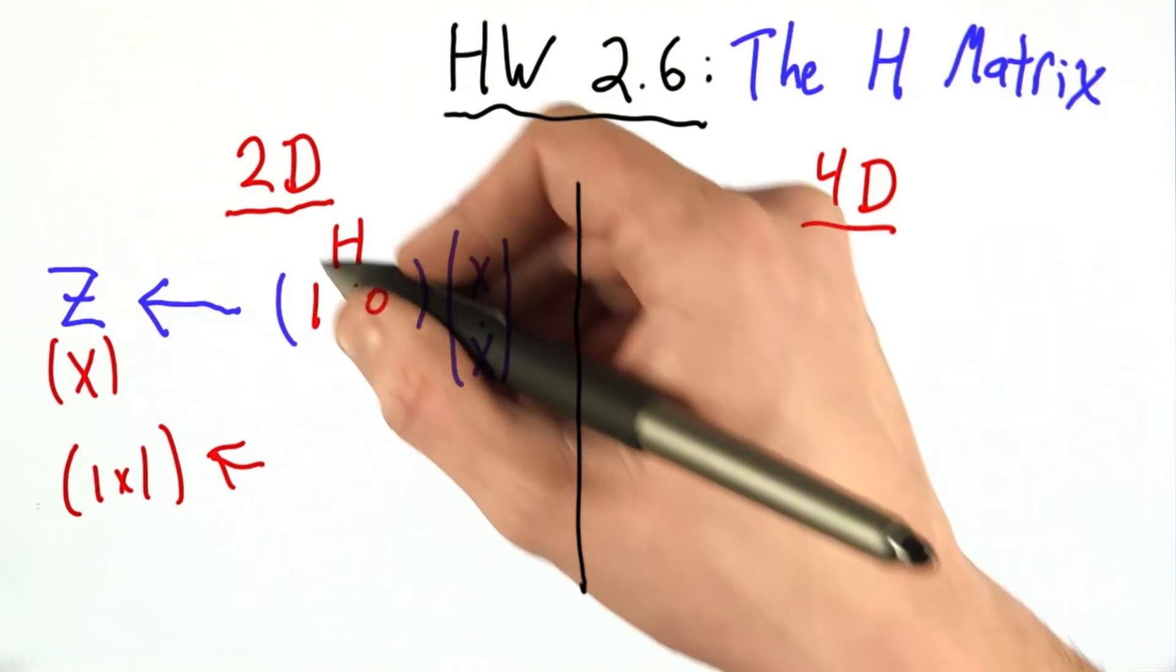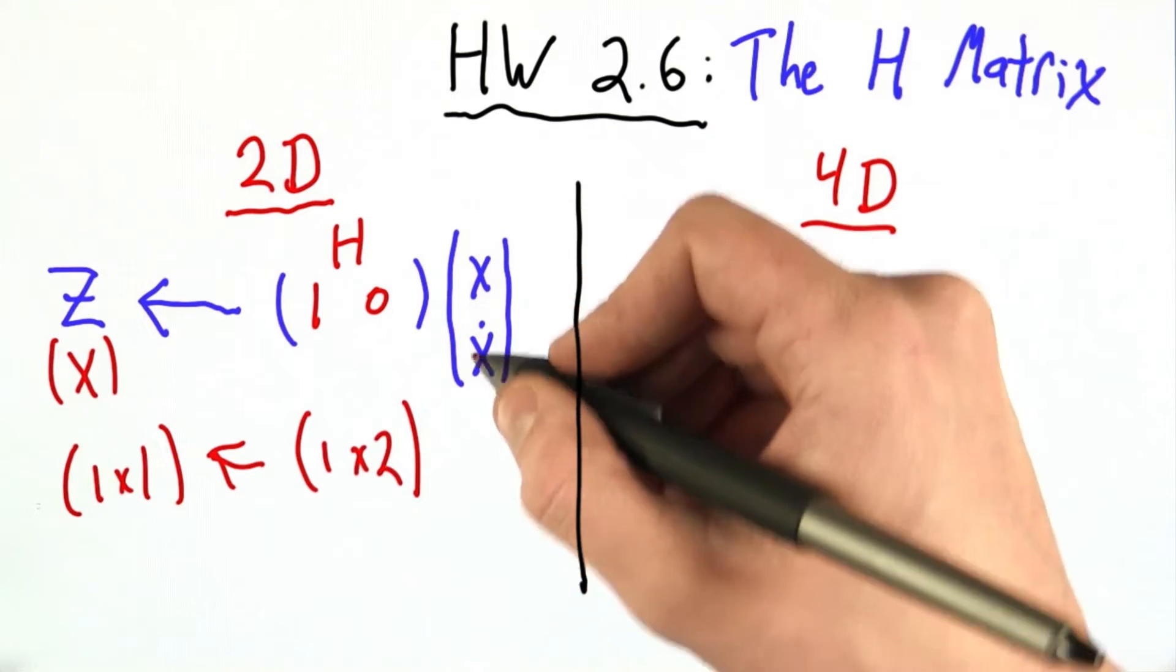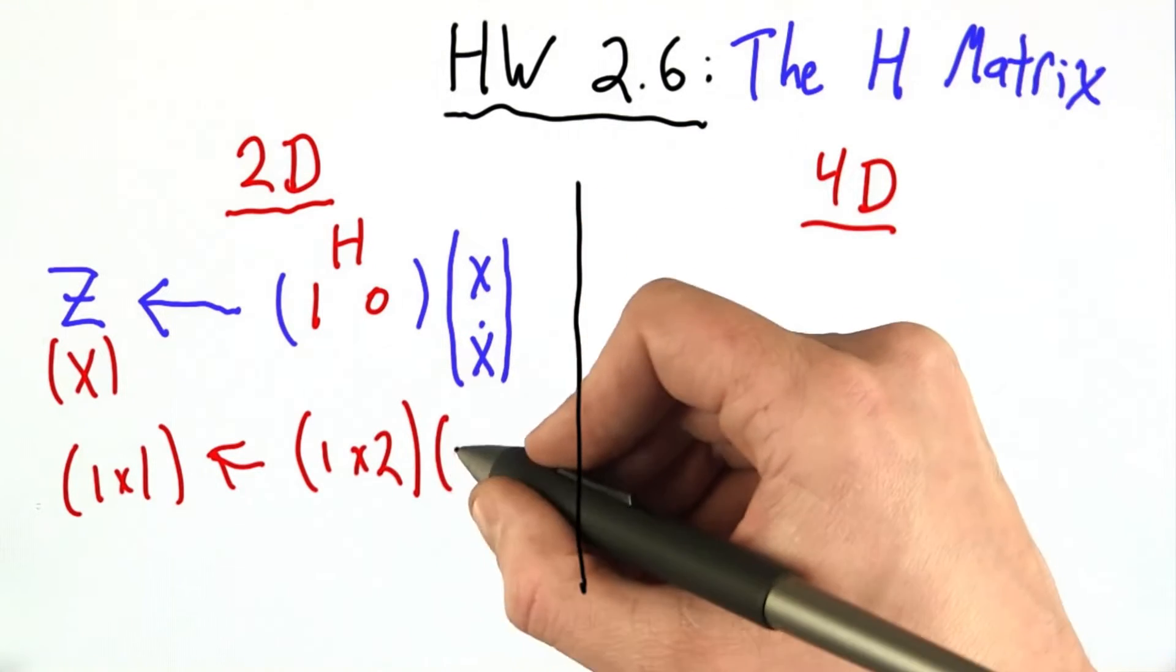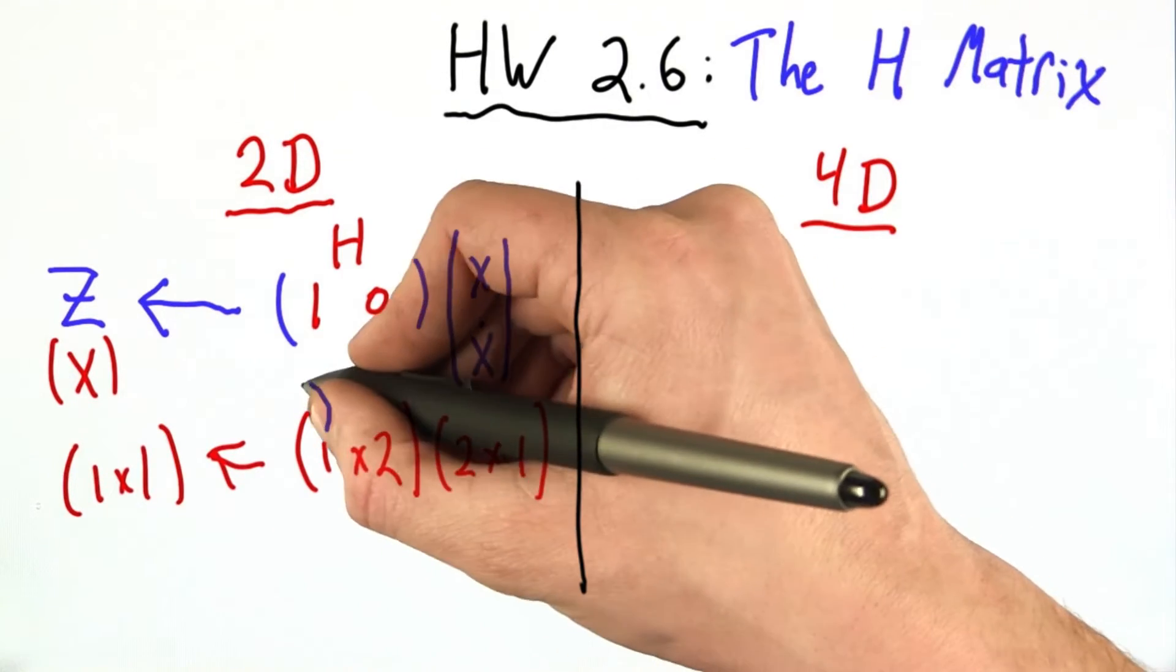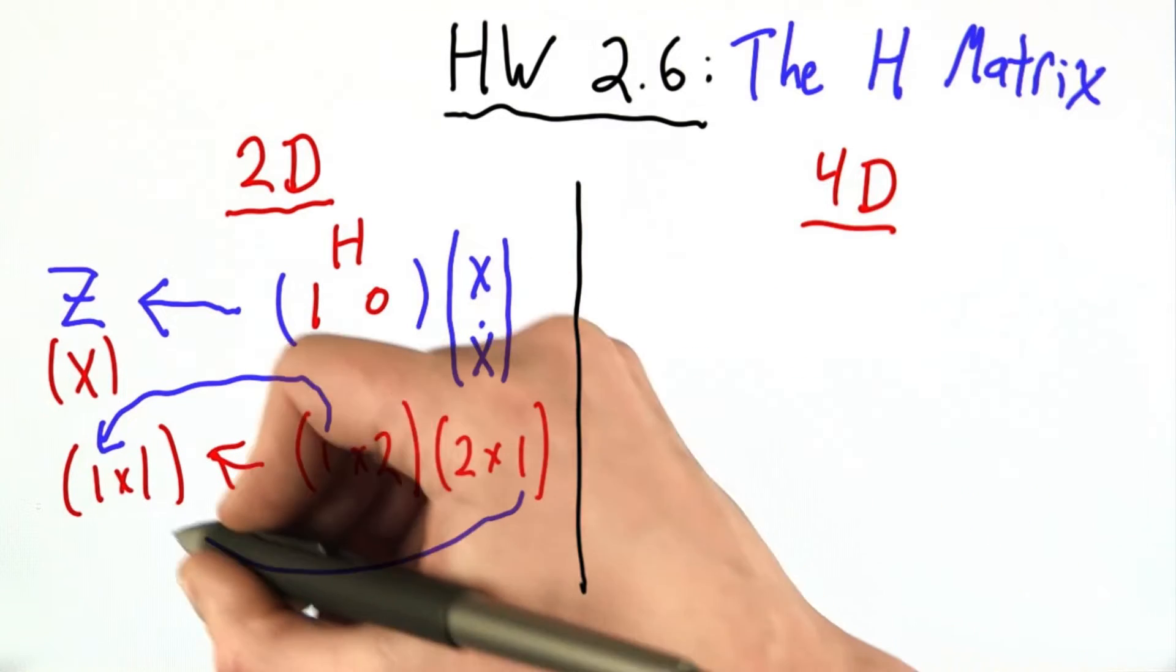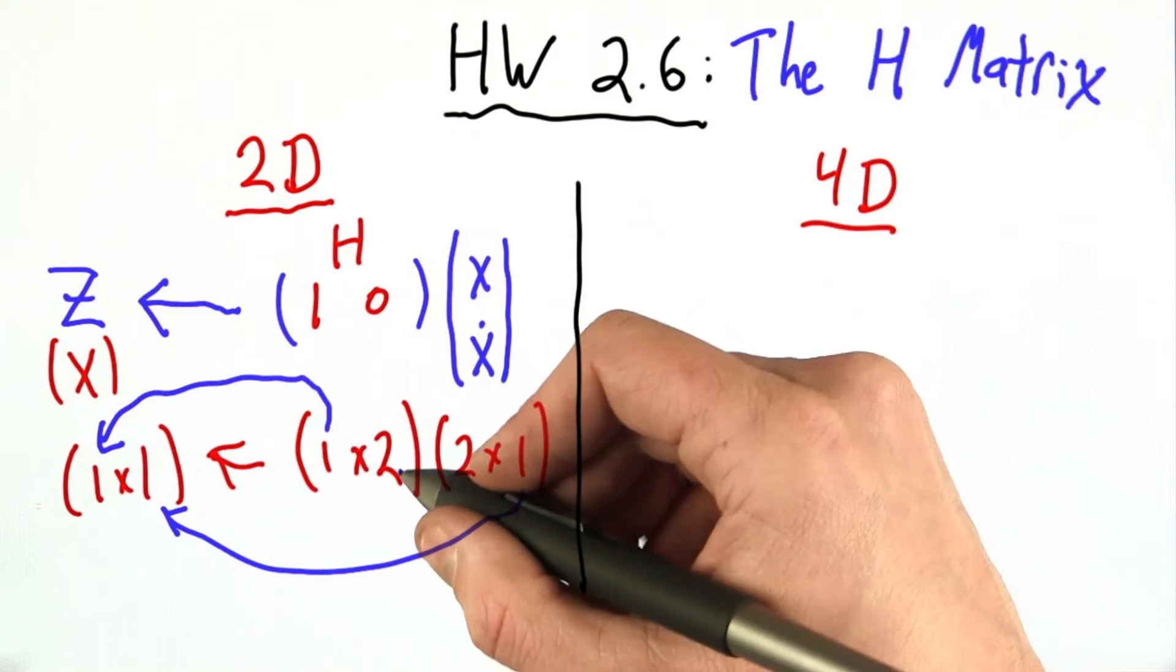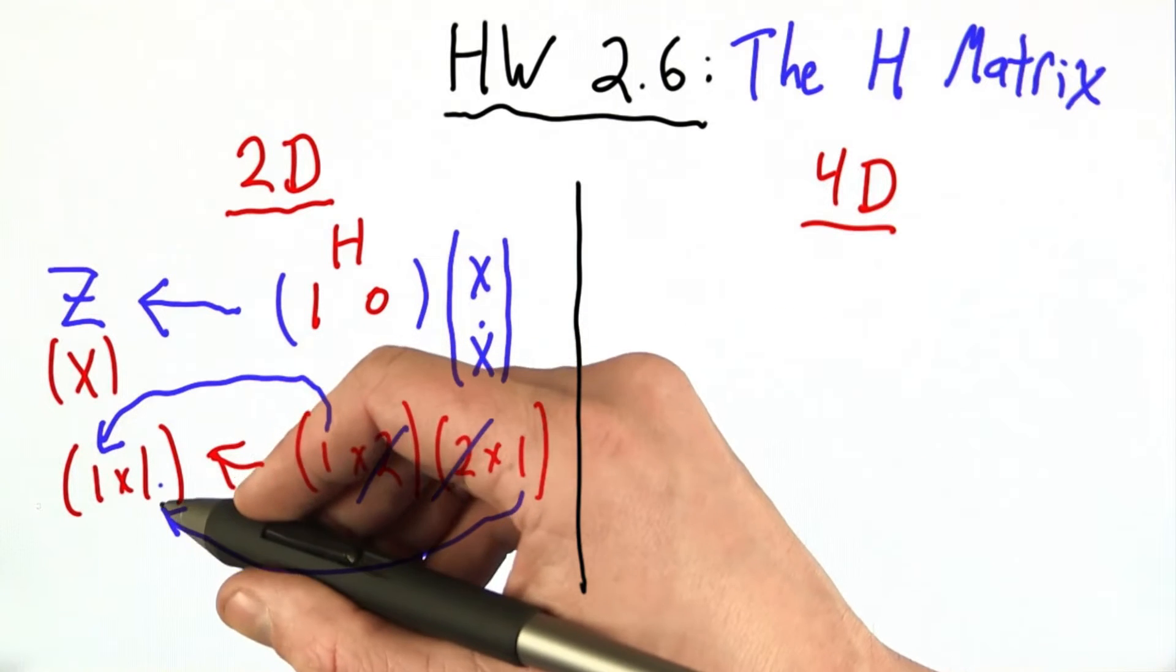And we got that matrix by multiplying this one, which is a 1 by 2, 1 row by 2 columns, with this, which is 2 rows by 1 column. And what we see here is that this 1 actually came from right here. And this 1 came from right here. And these 2's we can think of as canceling out in a way, giving us this 1 by 1 matrix.